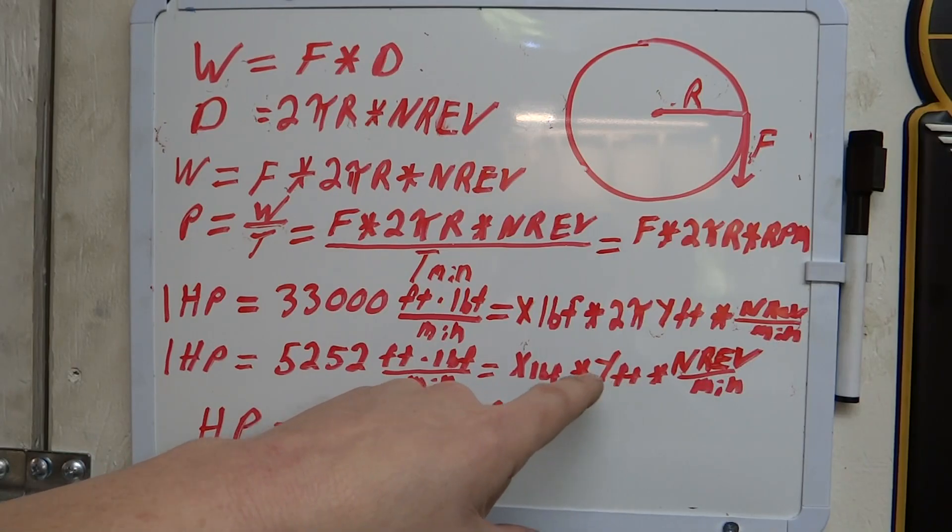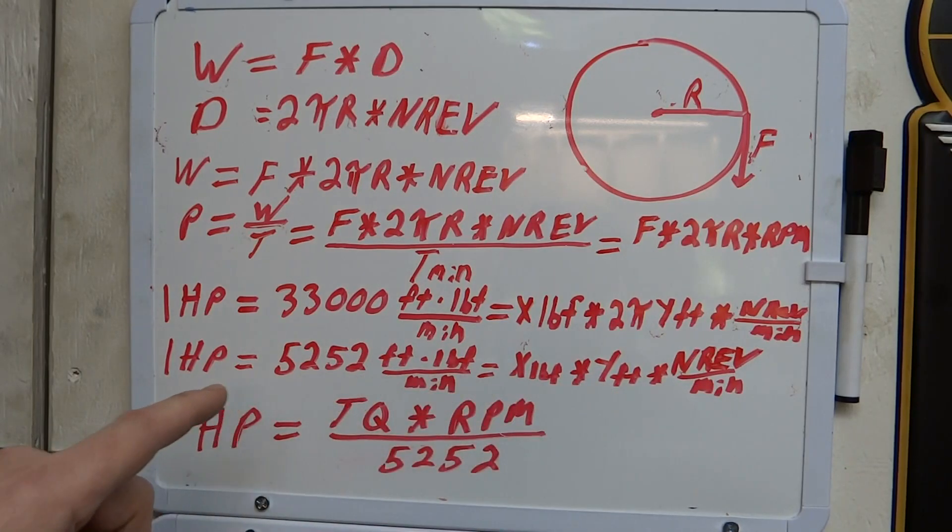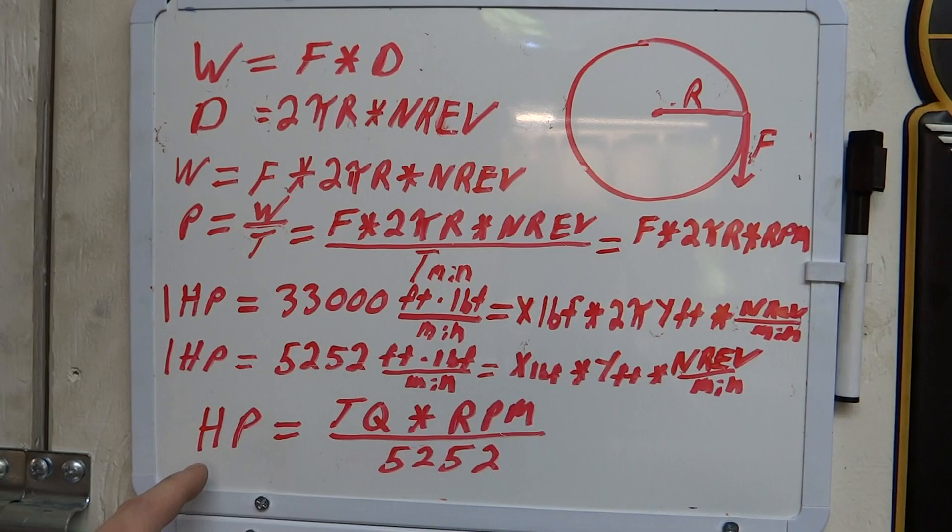This portion here can just be represented as torque, and that's the number of revolutions per minute. So the way it comes out is down here: horsepower equals torque times RPM divided by 5252. So that's basically how you derive that equation that we've all kind of gotten used to.